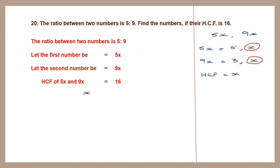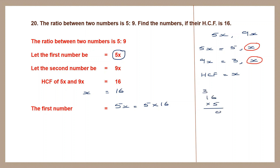With x equal to 16, the first number is 5x, that is 5 into 16. Multiplying: 5 sixes are 30, carry 3; 5 ones are 5 plus 3 is 8. So the first number is 80.